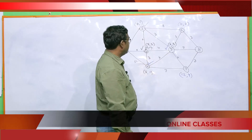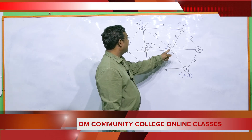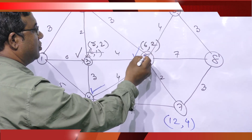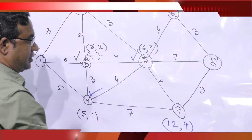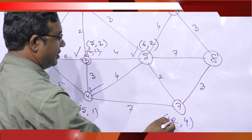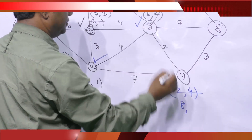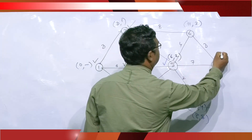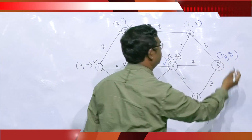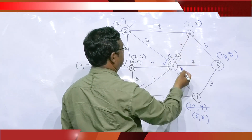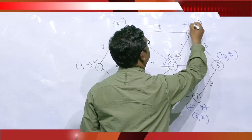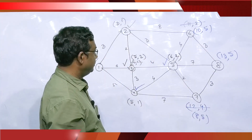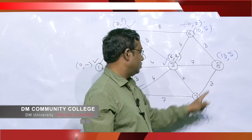Next, check the unticked nodes directly connected to node 5. There are three nodes connected. Update working levels: node 7 is 6 plus 2 equals 8, which is less than 12, so update to (8, 5). Node 6 is 6 plus 4 equals 10, which is less than 11, so update to (10, 5). Select the smallest working level.